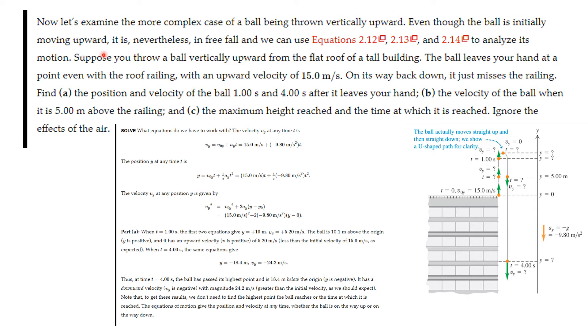So the ball is thrown vertically upward. Even though it's moving upward vertically, it is in free fall because the only acceleration is gravity pulling down. So the equations we've been using all apply. So you throw a ball vertically upward from the flat roof of a tall building. It leaves your hand at a point even with the roof railing, and with an upward velocity of 15 meters per second. This is positive going up. On its way back down, it just misses the railing. So you want to find the position and velocity of the ball when time is one second and four seconds after it leaves your hand. You want to know the velocity of the ball when it is five feet above the railing. And you also want to know the maximum height that it reaches before it starts coming down, and the time at which that maximum height is reached.